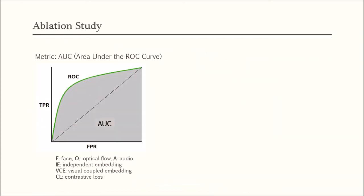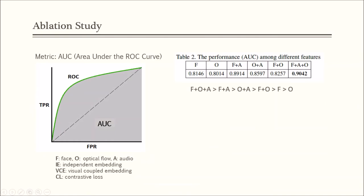We evaluated the performance using AUC, which is short for area under the ROC curve. Here we list the results of the ablation study. We abbreviate the facial image, optical flow, and audio signal as F, O, and A, respectively. IE for independent embedding, VCE for visual-coupled embedding, CL for contrastive loss.